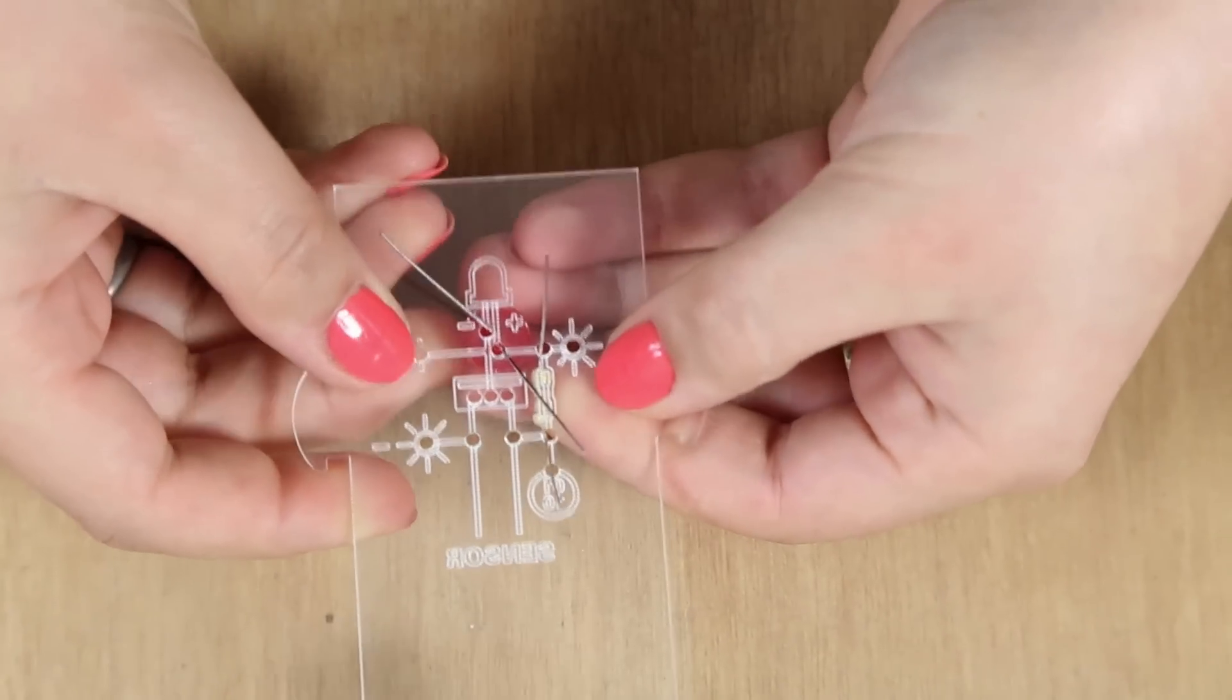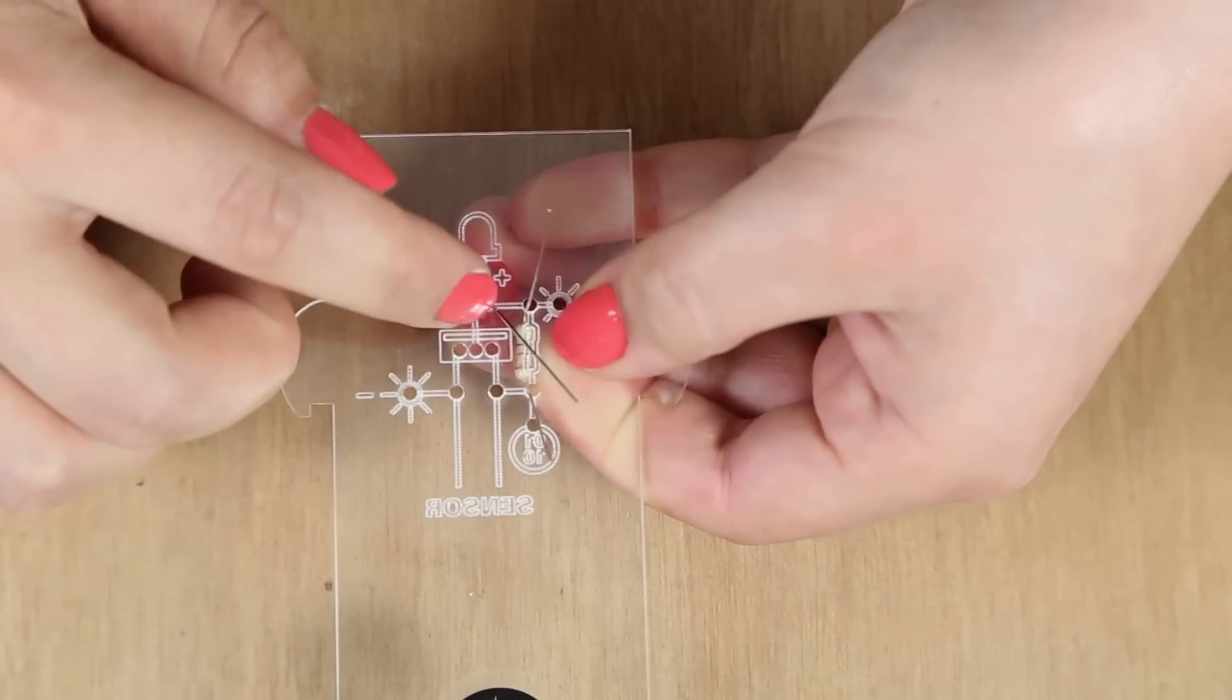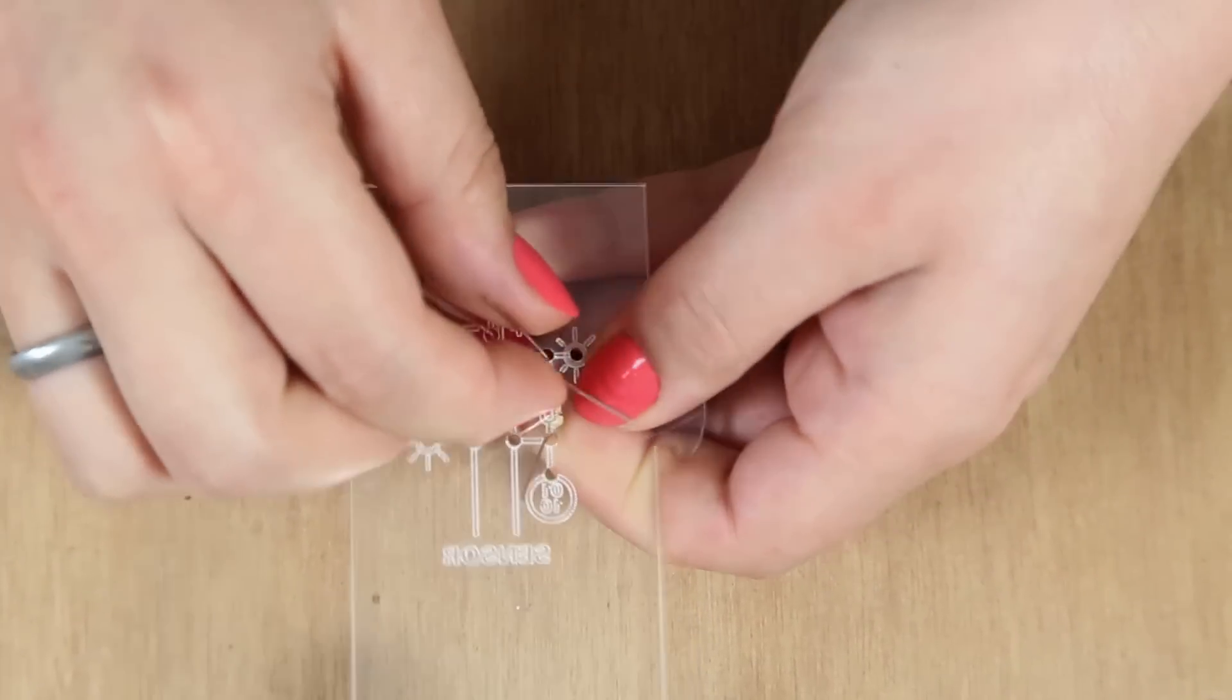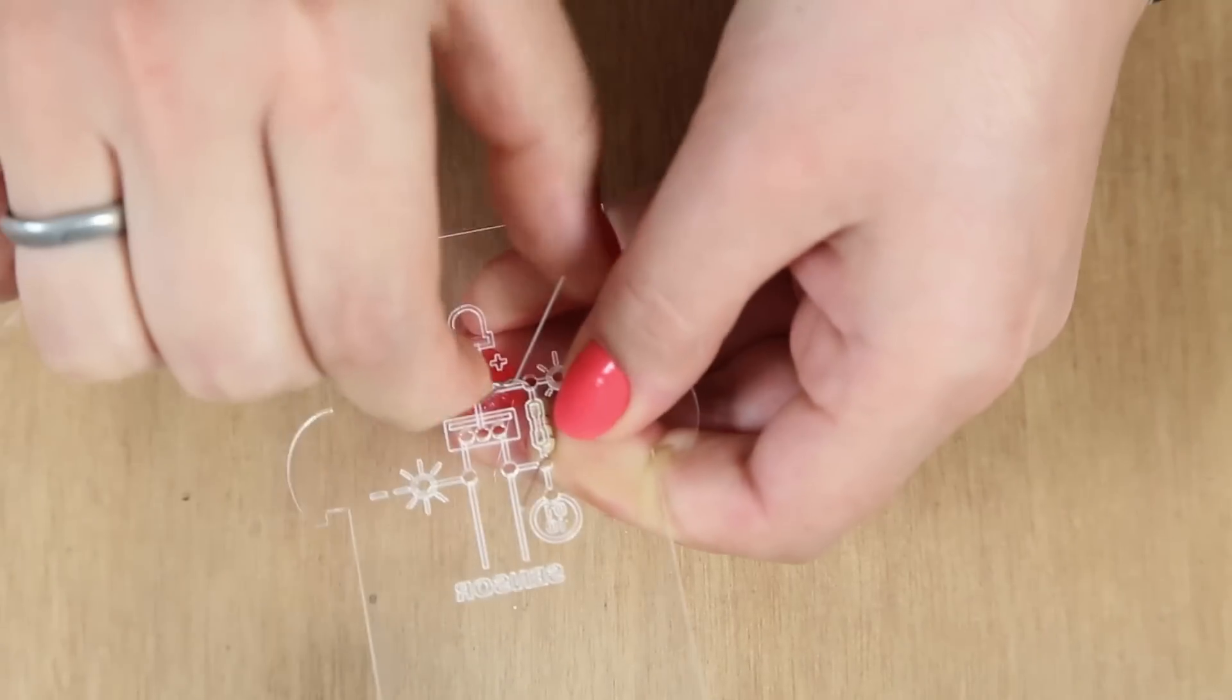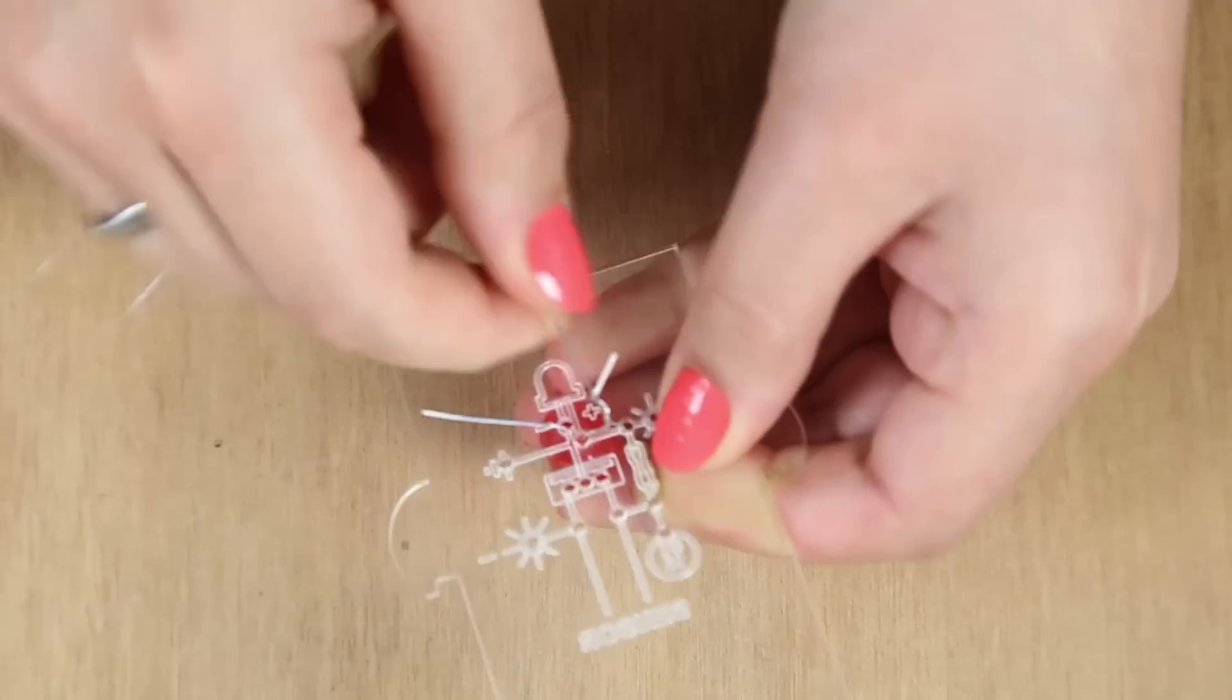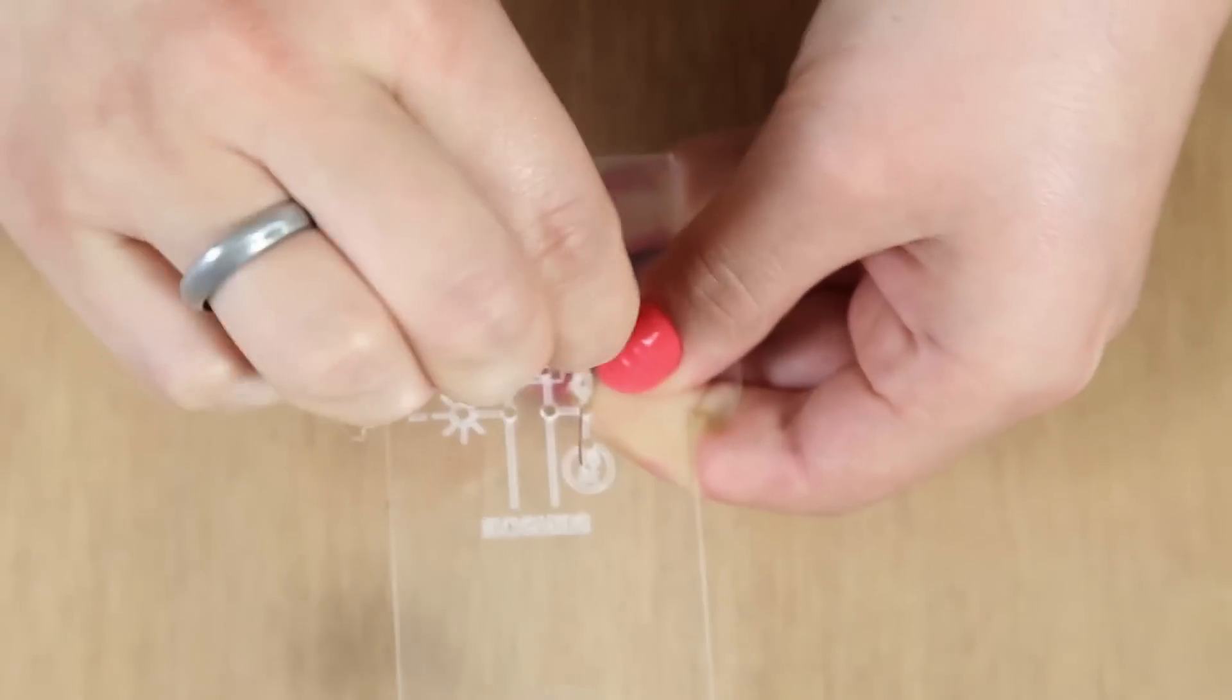So the way the Thirsty Plant works is that you twist components together. So we're going to take the positive leg of the LED and one of the legs of the resistor and just twist them together like this. And that's how you make a connection.